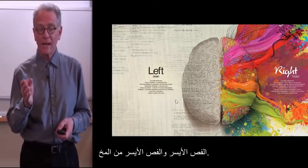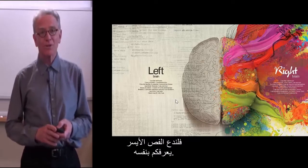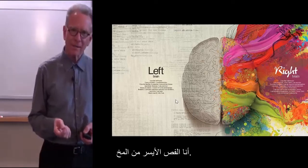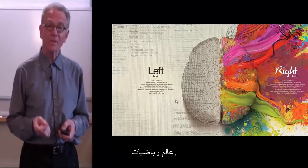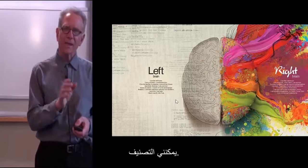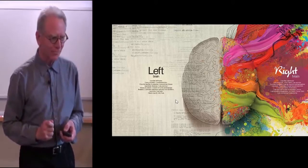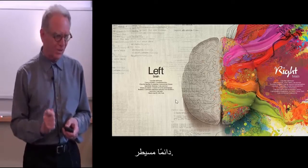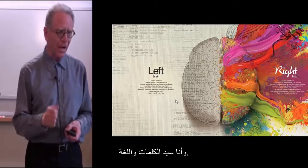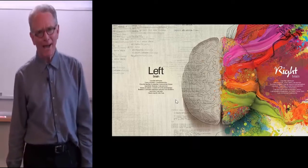The left brain and the right brain. Let's have the left brain introduce itself to you. I am the left brain. I am a scientist, a mathematician. I can categorize. I am accurate, I am linear. I love the familiar. I am always in control. I am a master of words and language. I am order, I am logic, and I know exactly who I am.